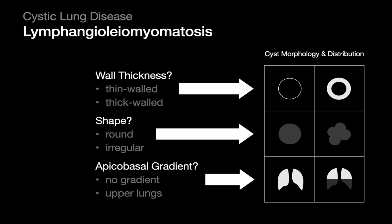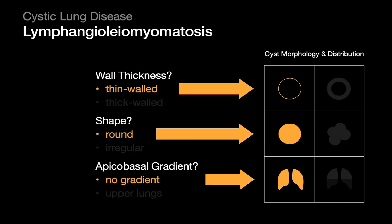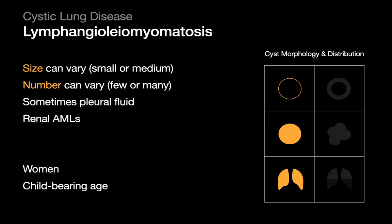The cysts in LAM are thin-walled and generally round. In terms of distribution, there's no substantial cranial-caudal gradient. Size can vary from small to medium, and number can vary from few to many. Some patients with LAM may also present with pleural fluid. In TS-associated LAM, it's not uncommon to see renal angiomyolipomas. The demographic to think of is generally women of childbearing age.